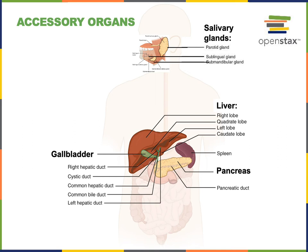The pancreas produces a large amount of digestive enzymes that are important for chemical digestion. The pancreas also produces bicarbonate that functions to neutralize the acidity of chyme coming from the stomach. Pancreatic juice is secreted into the duodenum, where it mixes with chyme coming from the stomach, neutralizing the acidity and enabling chemical digestion.